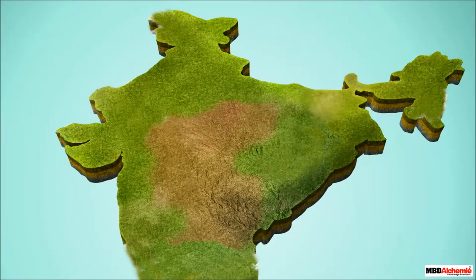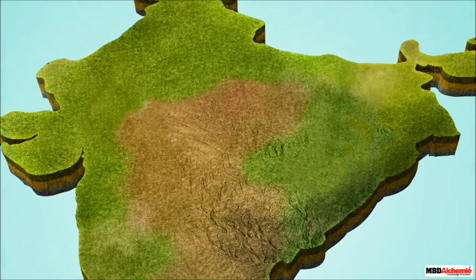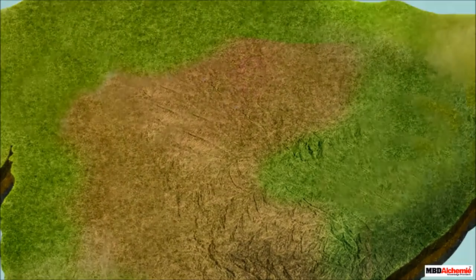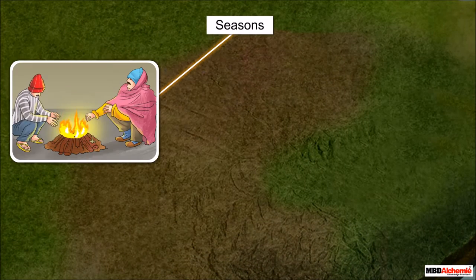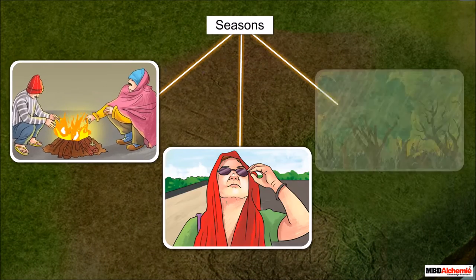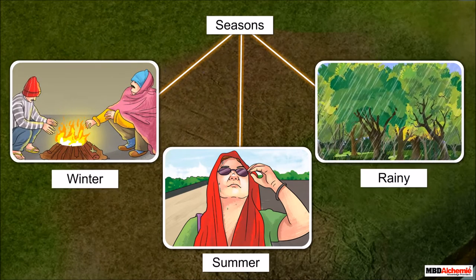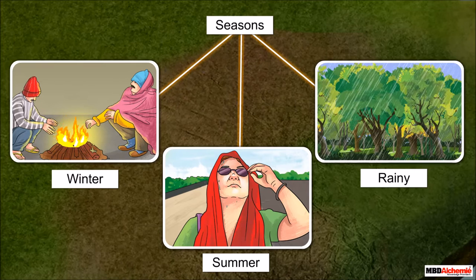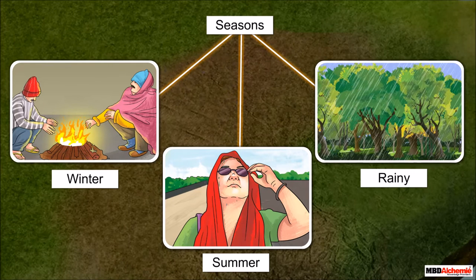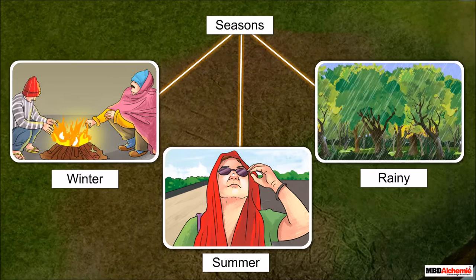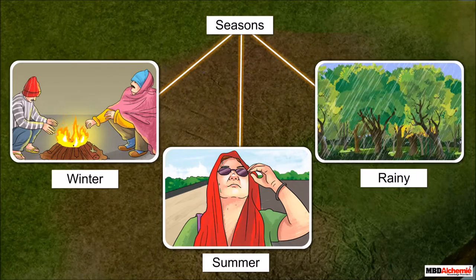A breezy day can end up into a stormy day or a dry morning can turn up to be a wet evening. Thus observing the trend of generalized monthly atmospheric conditions we divide a year into a number of seasons. In India a year is divided into winter, summer, and rainy seasons.